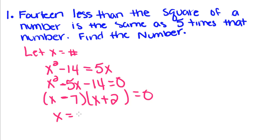Then we set these equal to 0. x minus 7 equals 0, x plus 2 equals 0. Add 7 over you get 7. Subtract 2 over you get negative 2.